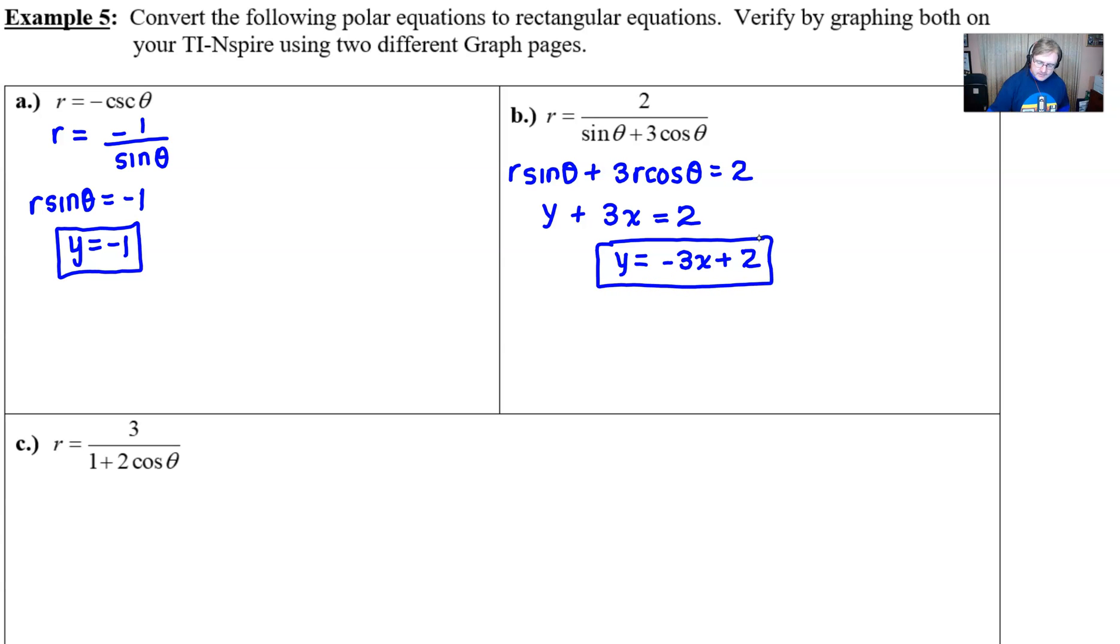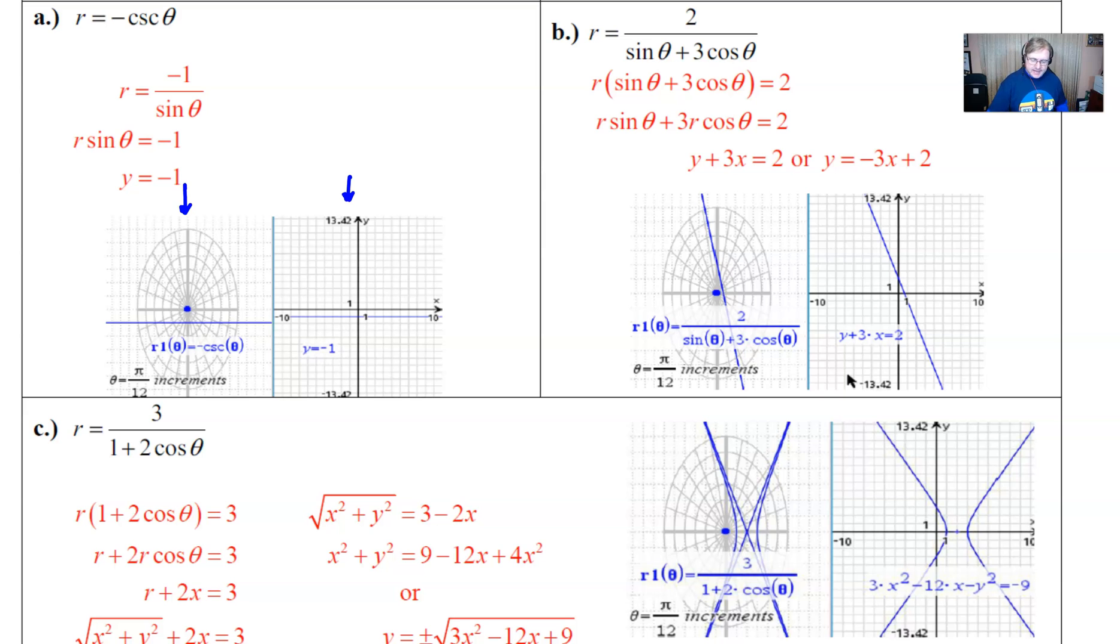So if we want to take a look on the next page, that is indeed what we have. Here is our graph of y equals negative 3x plus 2. And then if we compare that to our 2 over sine theta plus 3 cosine theta, it is the same thing. Now, I know the slopes don't look quite the same. They don't look parallel. But a lot of that has to do with these grid boxes not being aligned just perfectly.